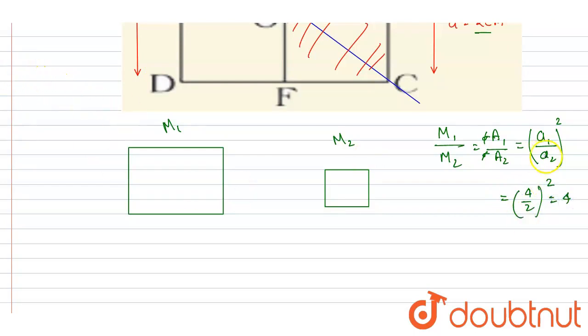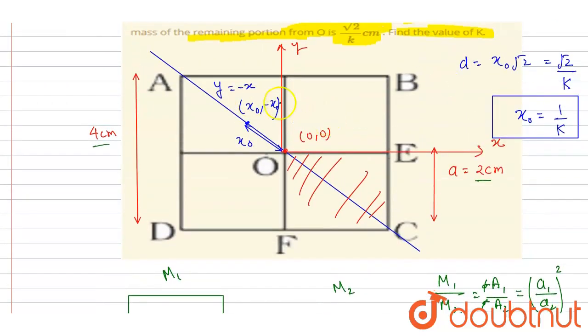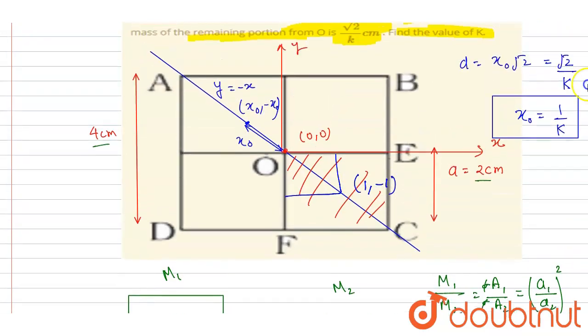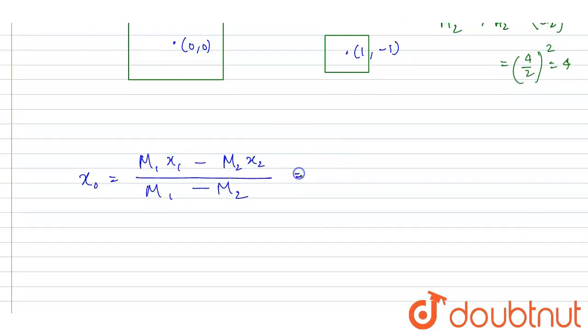Now if we apply the formula, the center of mass x coordinate x naught equals m1 x1 minus m2 x2 by m1 minus m2. From the symmetry, the center of mass coordinate of the bigger square is at the origin, and the smaller square will lie at 1 comma minus 1 on the same line. We are finding out the x coordinate only, so this term will become 0, and here I will write m2 and x coordinate is 1, and m1 is 4 times of m2.